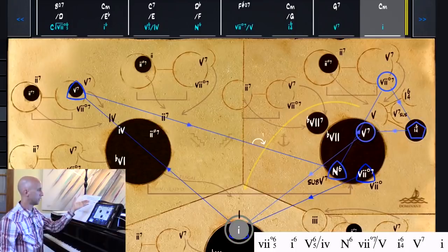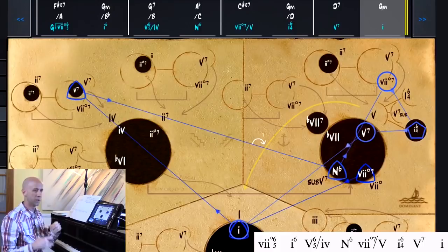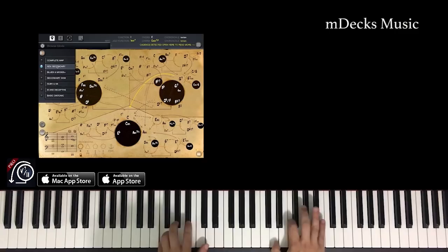You can see them by their name in the key of C there, or if we're in the key of F there's their new names, if we're in the key of G there's their new names. But again, their functions remain the same, the paths remain the same, the Roman numerals remain the same.